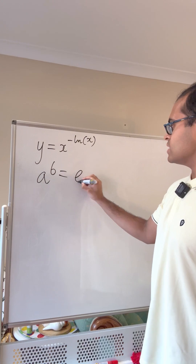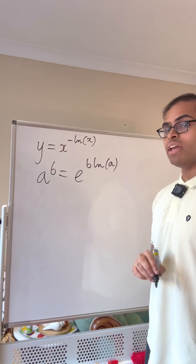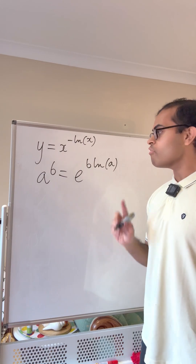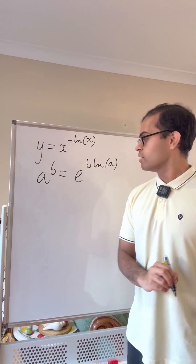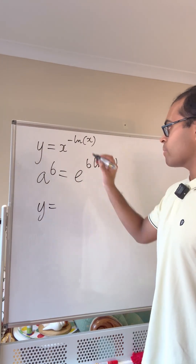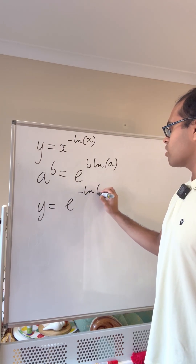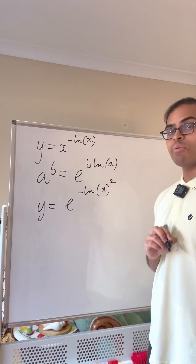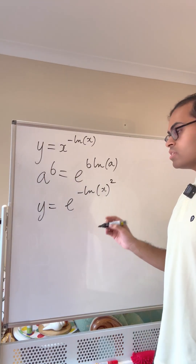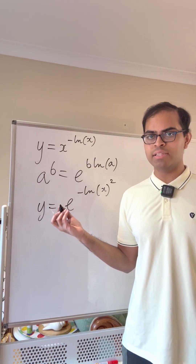We define a^b as e to the power of b times log a. You can check that if a and b are integers, it matches the usual definition of multiplying a by itself b times. In this case, y equals x to the power of minus log x becomes e to the power of minus (log x) squared. The domain is all positive numbers, since log x is only defined for positive x.